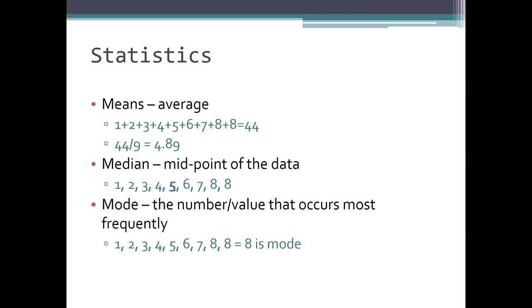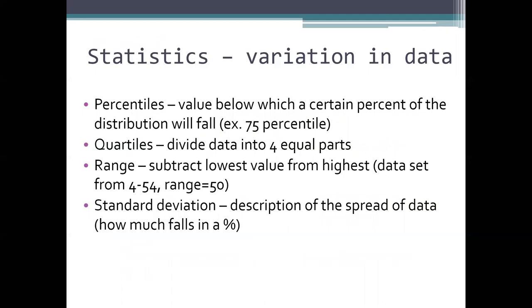We need to look at numbers for this. Mean — the average; if we average our numbers, it comes out to 4.89. Median — the midpoint of the data. Mode — the most commonly occurring value. Percentiles — the value between which a certain percentage of the distribution falls. For example, the 75th percentile. I fall in the 9th percentile in competitive online Destiny — meaning I'm in the top 9% of all players.